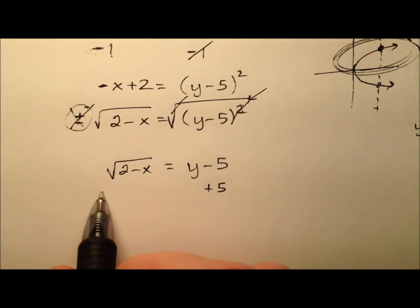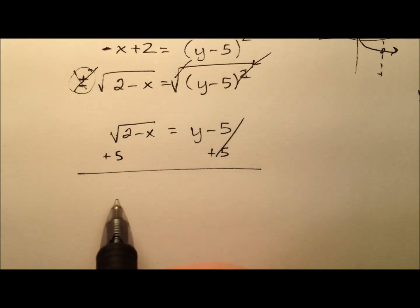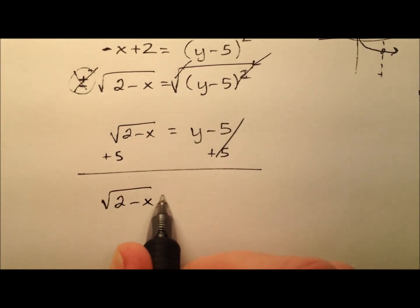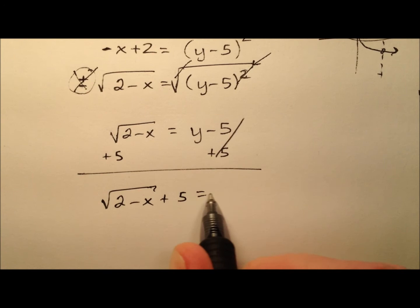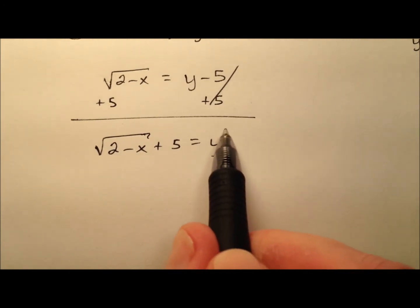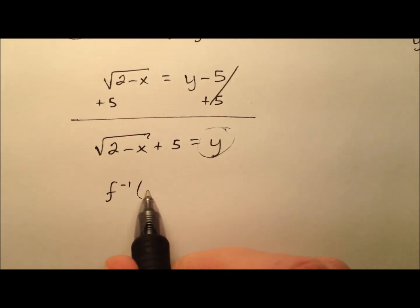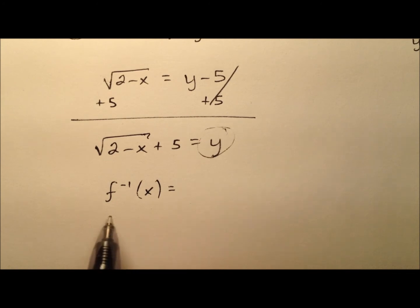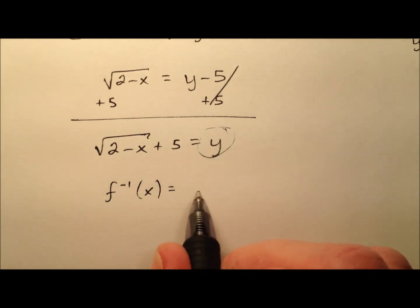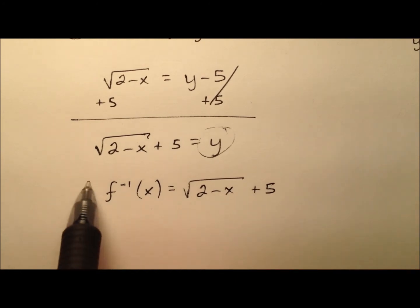And so to finish solving for y, let's go ahead and add 5 to both sides. And so we have the square root of 2 minus x plus 5 equals y. And let's go ahead and write this in a function notation, because this is the inverse now. So we're going to say the inverse of f of x equals, and remember we have this little negative one right here, kind of looks like an exponent, but it's the notation for inverse function. And we're going to say the square root of 2 minus x plus 5.